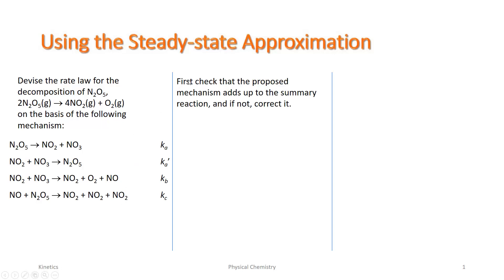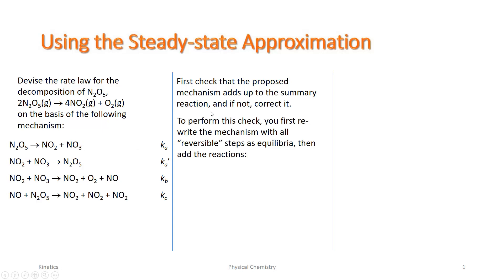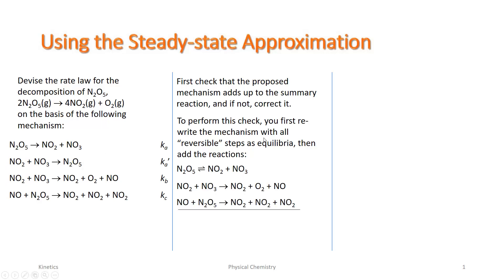The first thing we need to do is check that our mechanism is correct — that if we add it up, it gives us the overall summary reaction. To do this, we write out the steps. The first two elementary steps: the second is just the reverse of the first, so this is a reversible step, an equilibrium. Then the other two irreversible steps are placed underneath and we add them up.